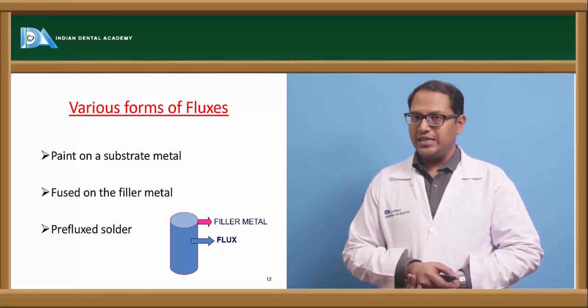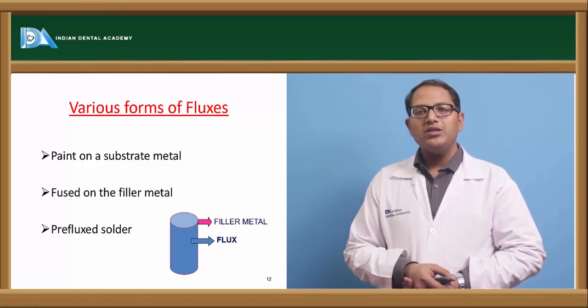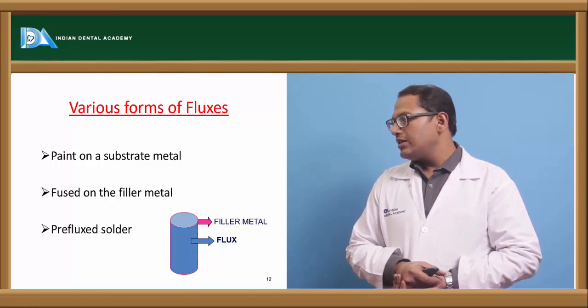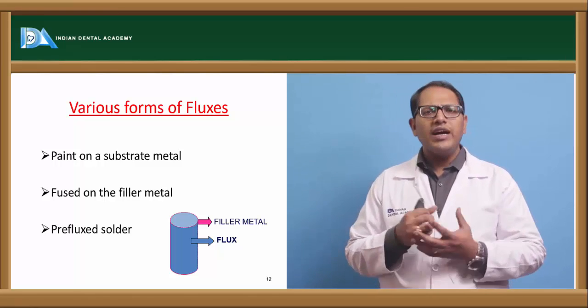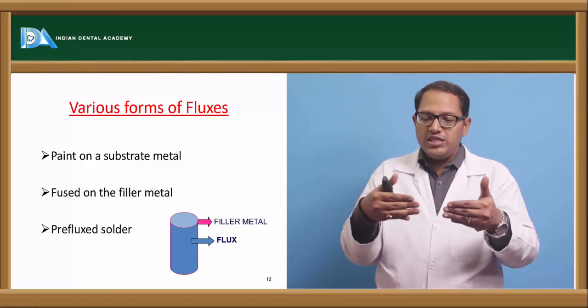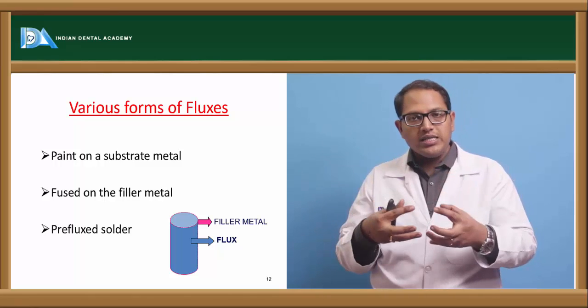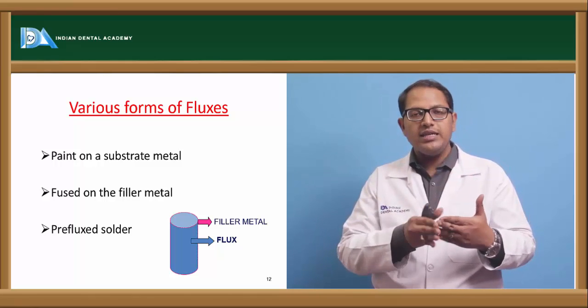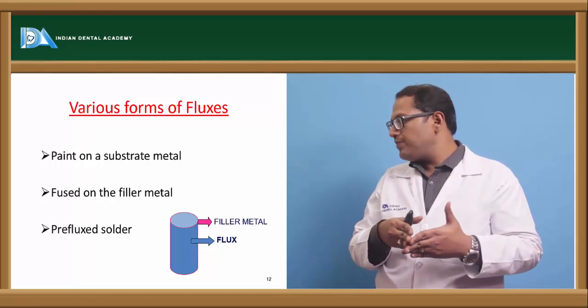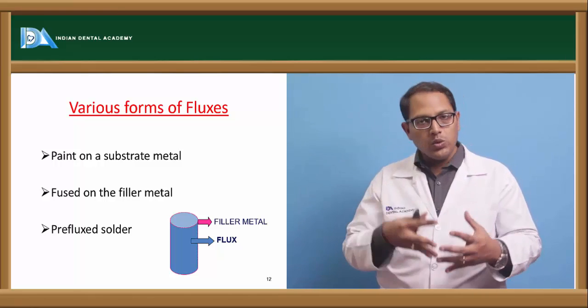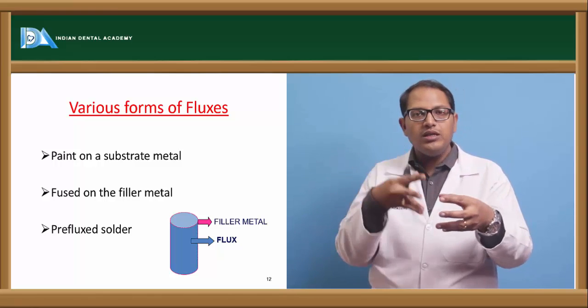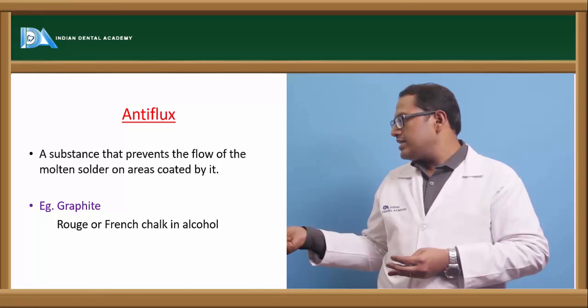Various forms of flux that are present. It can be painted on a substrate, it can be fused on a filler material, it can be pre-flux solder. Now why do we require flux? Because we need the material to flow in between the metals which are to be joined. So flux is the main important thing. Flux either can be painted on those metals, it can be flown with the temperature, or pre-flux solders can be present like a small pellet. So you can keep that in between and you can flow the heat onto that.